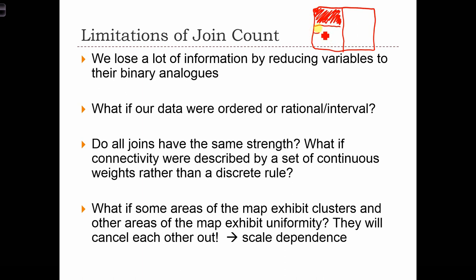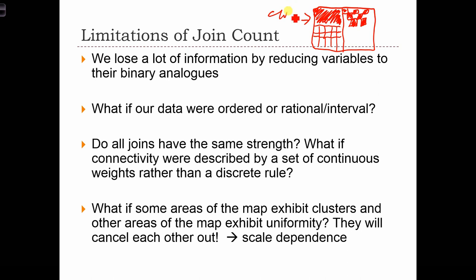So we have all the white polygons on one part. On the right-hand side, we have a checkerboard pattern. In this map, the left-hand side is showing clustering, and on the right-hand side the map is showing the opposite — uniformity or dispersion.